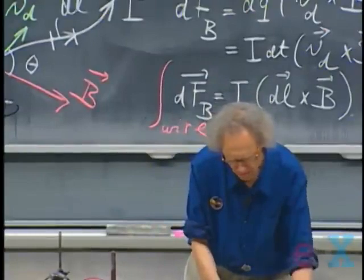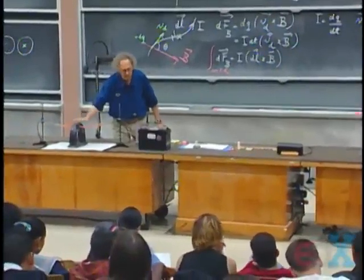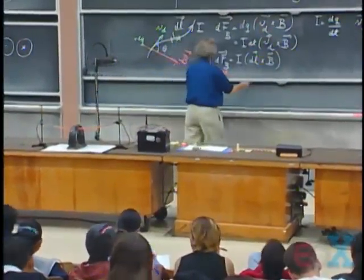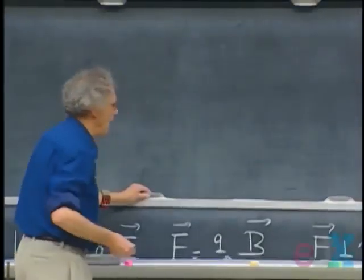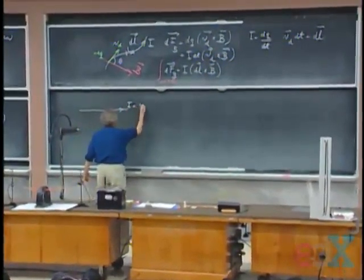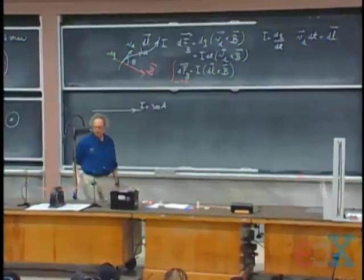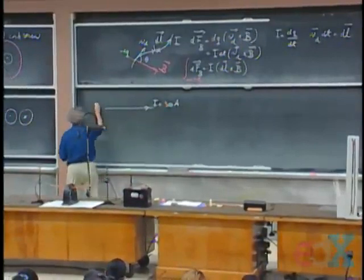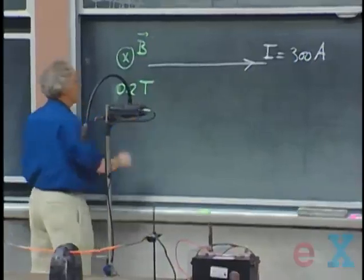So now I want to calculate what the force was on this wire roughly when we ran three hundred amperes through there. And I make a geometry so simple that we can execute that integral. This was the wire and we had a current running through here which was three hundred amperes roughly. And we have a magnetic field which was right in the gap there. That magnetic field B was two-tenths of a Tesla, two kilo-gauss.